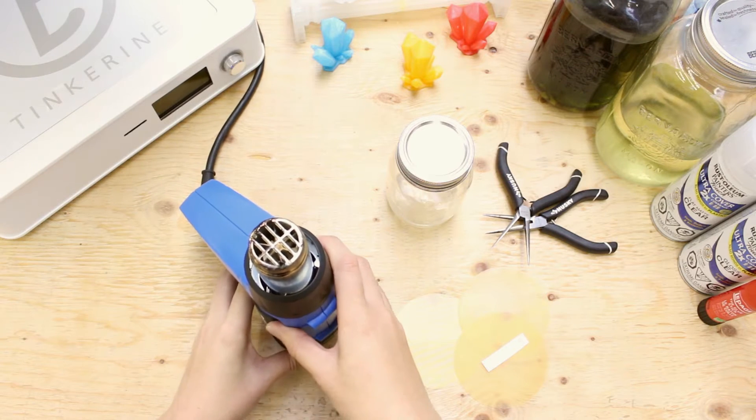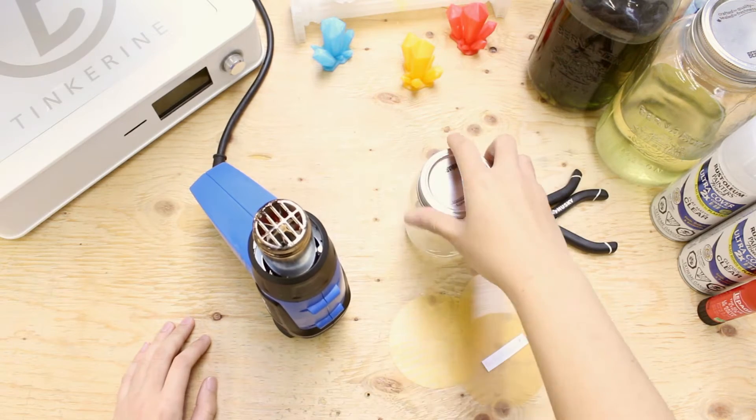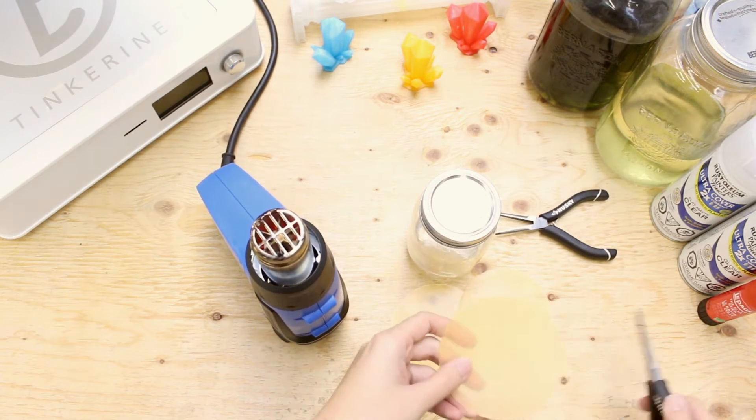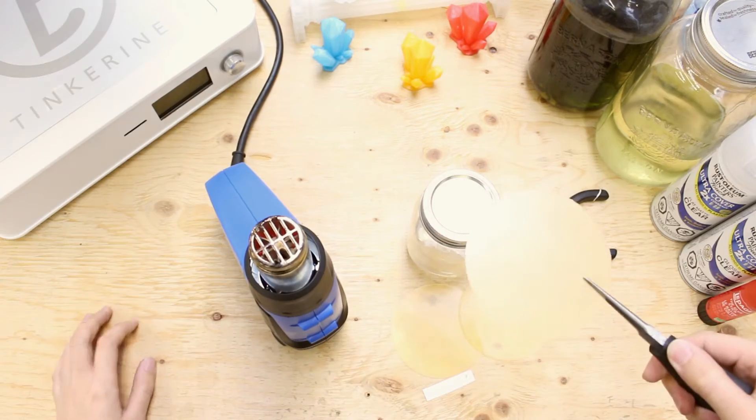Let's start. According to the video we watched online, we place the PLA circle above the heat gun until it softens. While it softens, we form the shape with our hands.